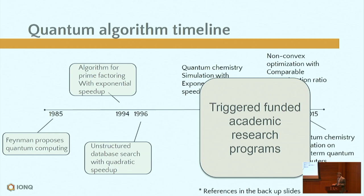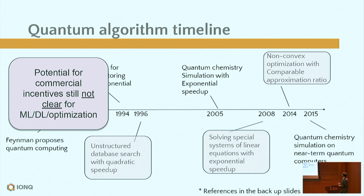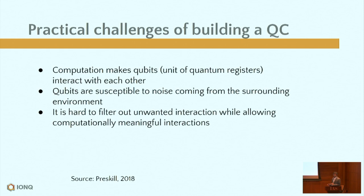Then came algorithms like quantum chemistry simulation and simulation on near-term quantum computers, which created a wave of private industrial research over the last few years. There are some quantum algorithms for non-convex optimization or special systems of linear equations that relate to what deep learning deals with, but the relationship between these algorithms and practical problems in deep learning is not well understood — which is why we have yet to see a wave of funding triggered by this set of algorithms.